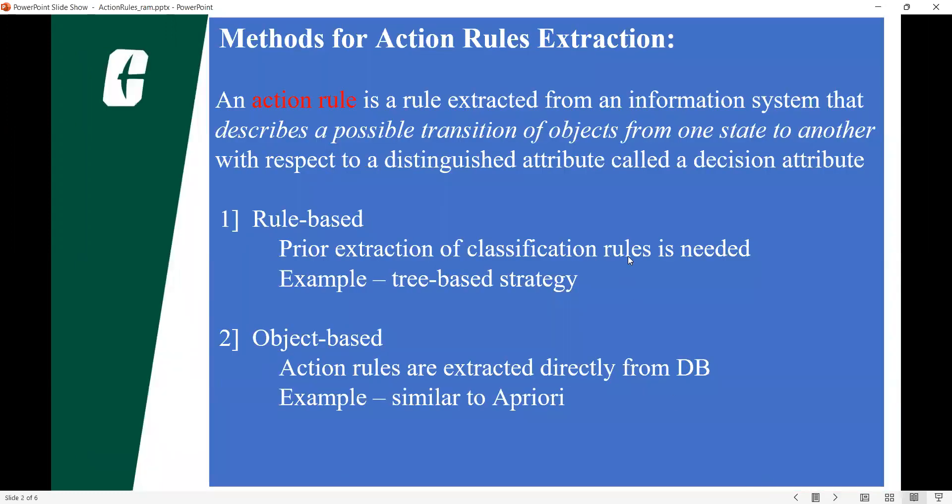When it comes to extraction of action rules, an action rule is an object transition from one state to another in an information system and it is divided into two parts, one is rule-based and one is object-based.